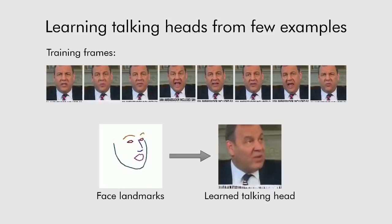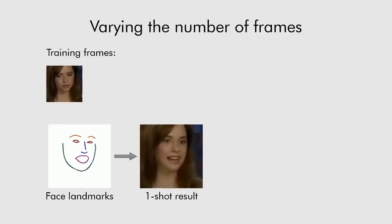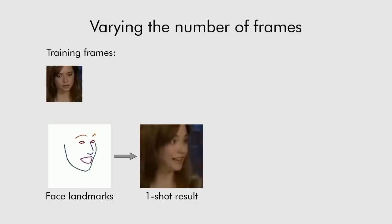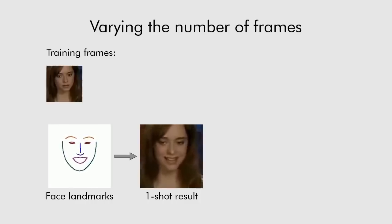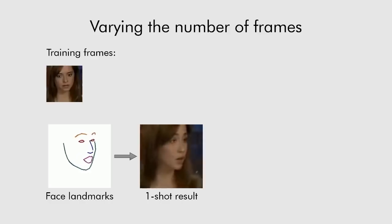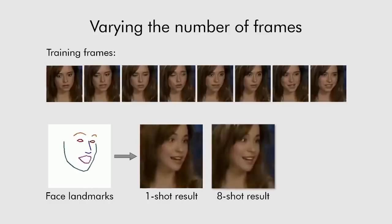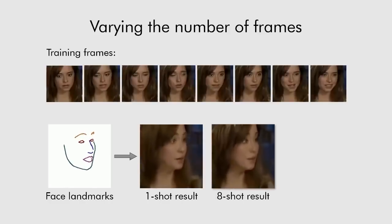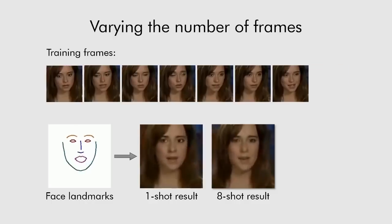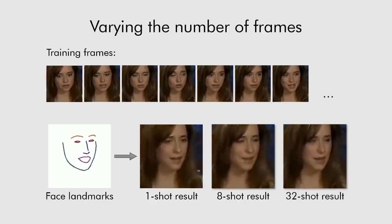Our system can learn from different numbers of frames. One-shot learning from a single frame is possible. Of course, increasing the number of frames leads to head models of higher realism and better identity preservation.